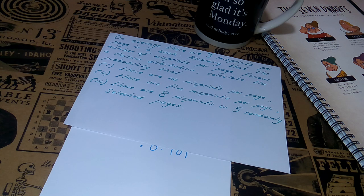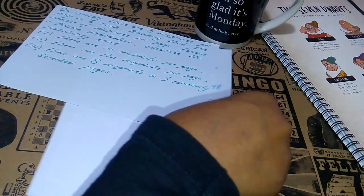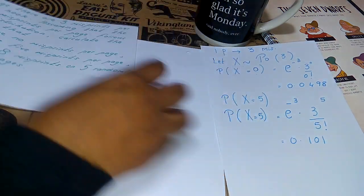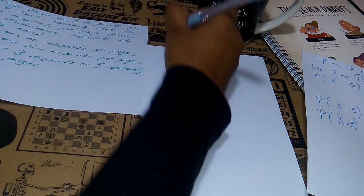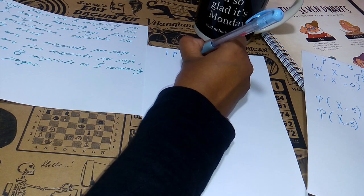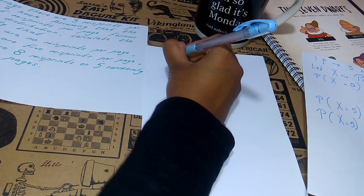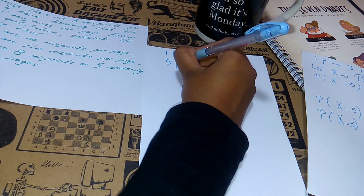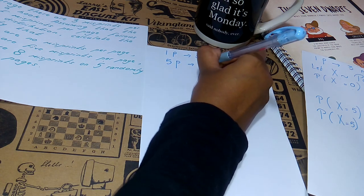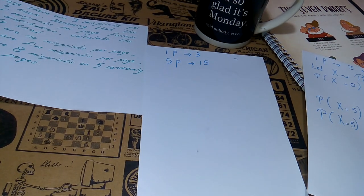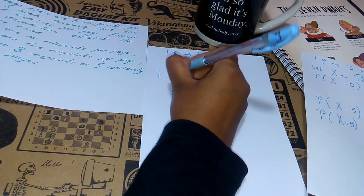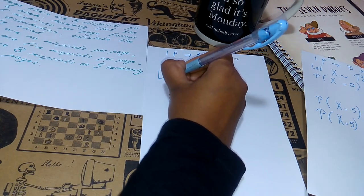Now part 3 asks us to find the probability of 8 misprints on 5 randomly selected pages. This time instead of per page we have 5 selected pages, so we need to change the parameter lambda. For 5 randomly selected pages — we know that for one page there are 3 misprints — but for 5 pages we're going to have 15 misprints.